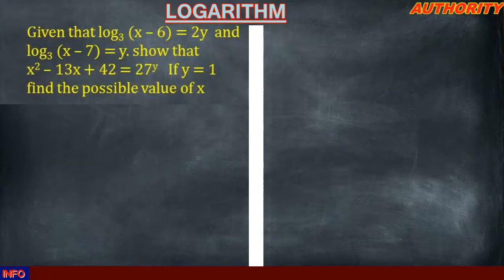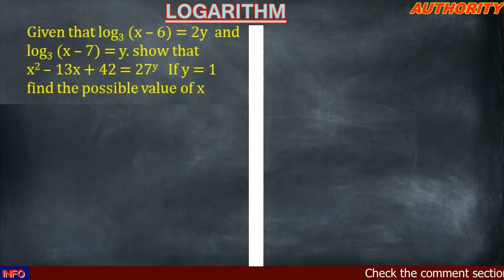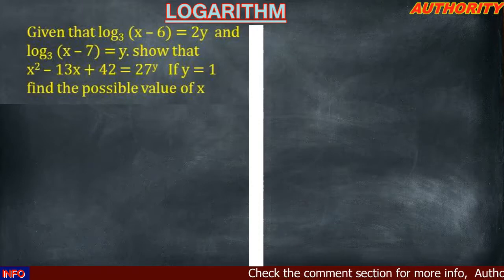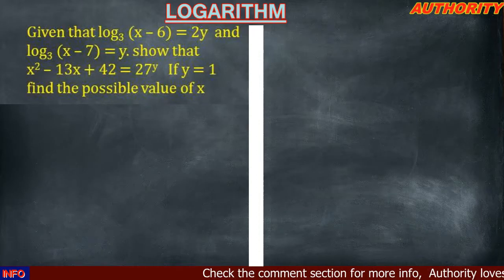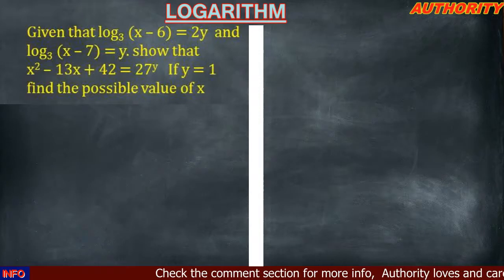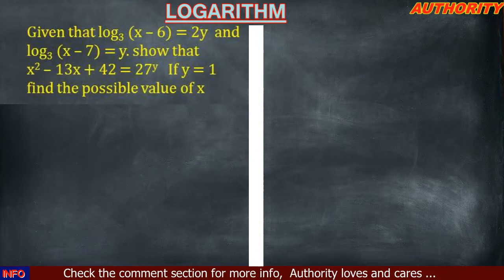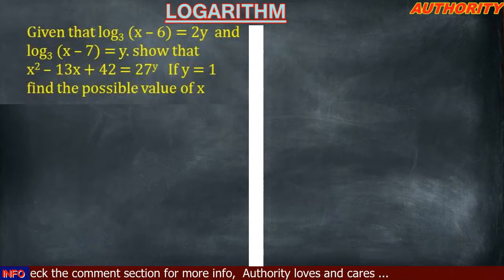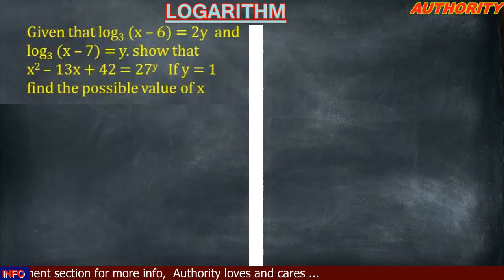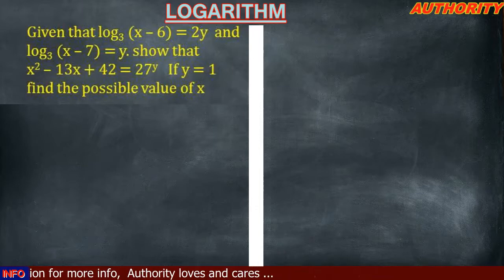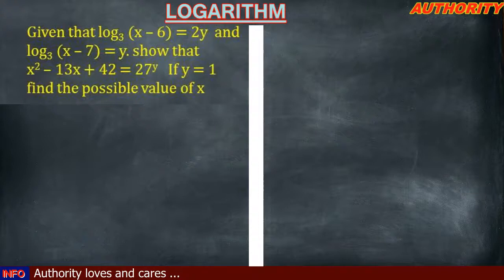So we have a two-part question. Part one: given log(x−6) base 3 equals 2y and log(x−7) base 3 equals y, we are to show that x squared minus 13x plus 42 equals 27^y. Part two: if y equals 1, find the possible values of x. Alright, let's go.